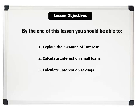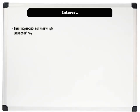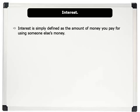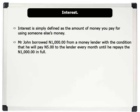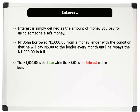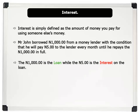Let us now define interest. Interest is simply defined as the amount of money you pay for using someone else's money. For example, Mr. John borrowed 1000 Naira from a money lender, with the condition that he will pay 5 Naira to the lender every month until he repays the 1000 Naira in full. The 1000 Naira Mr. John borrowed is called a loan, while the 5 Naira is the interest on the loan.